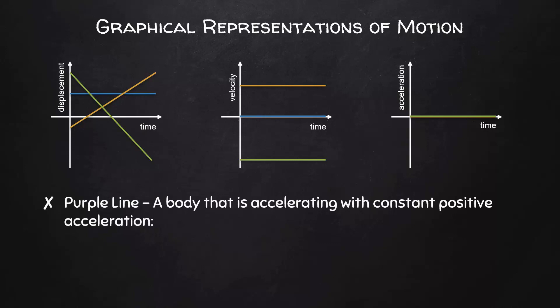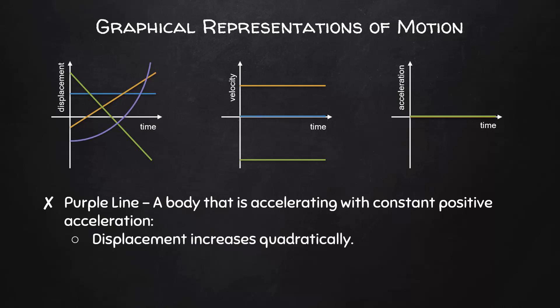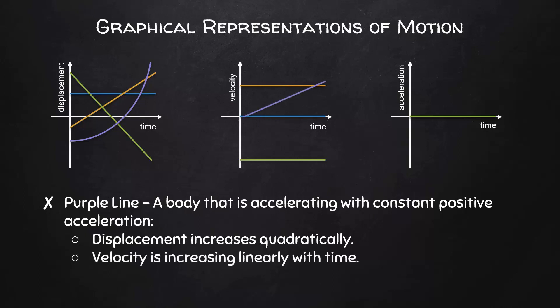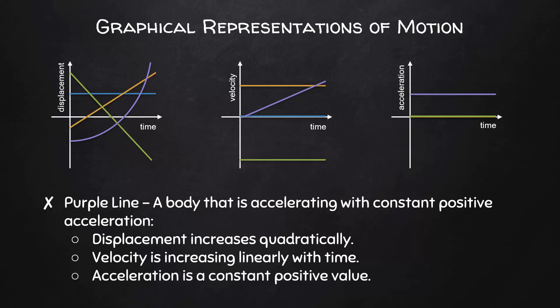Finally, let's look at an object accelerating with constant positive acceleration. Its displacement increases quadratically, its velocity increases linearly with time, and its acceleration is a constant positive value. There are other types of motion we could look at, but these four examples are the most common and give you a good foundation to build upon.